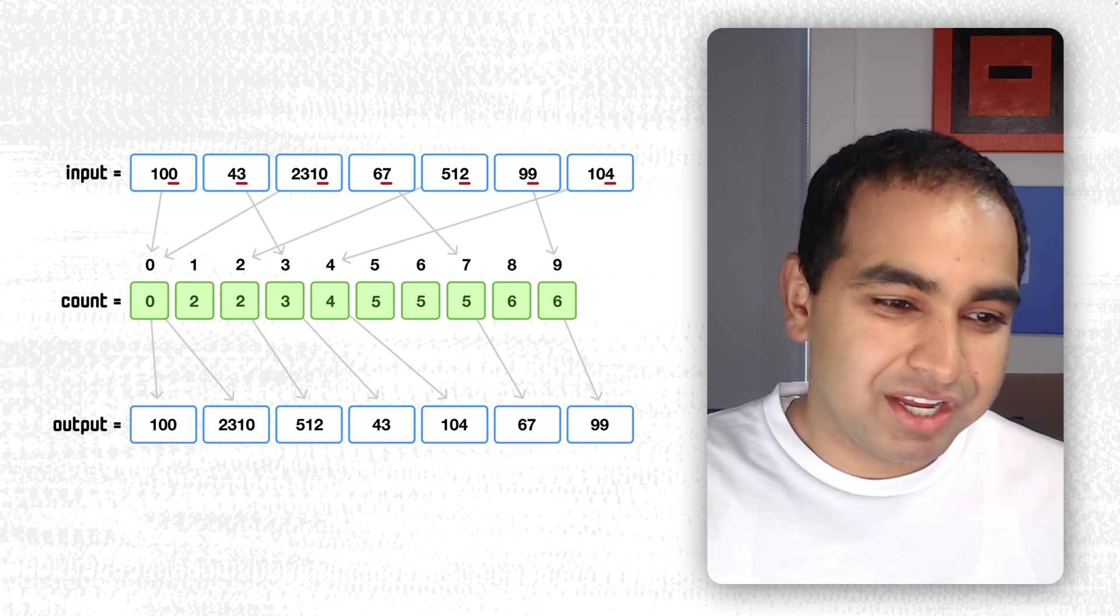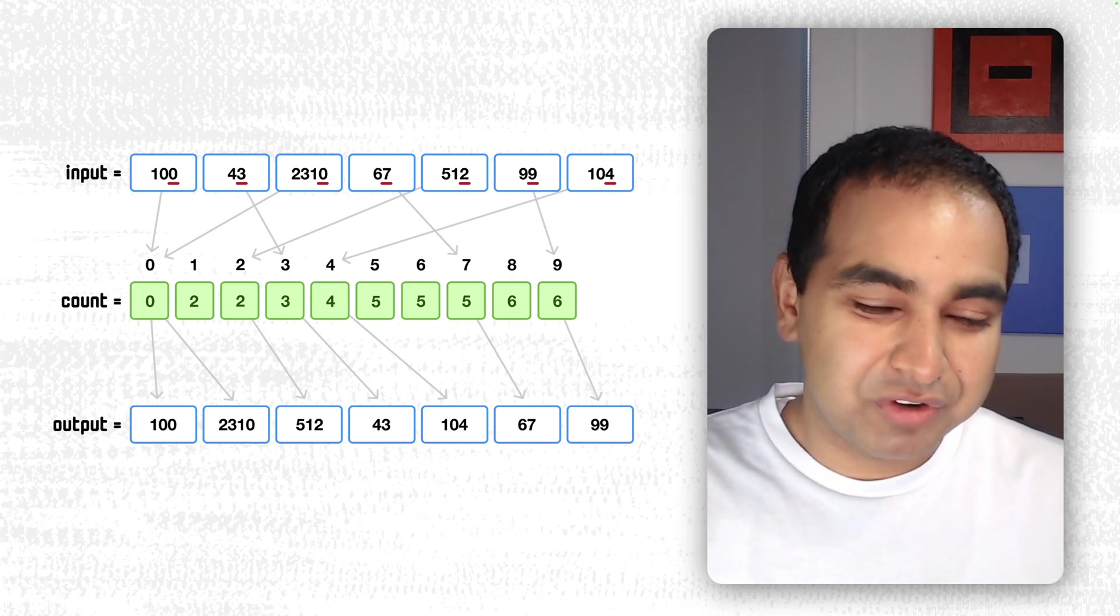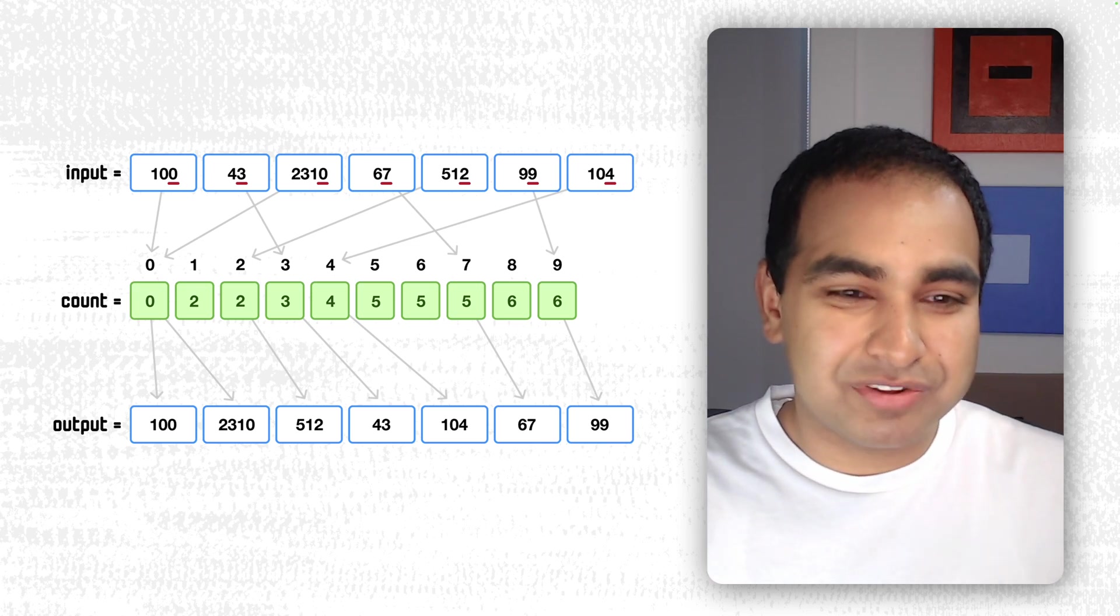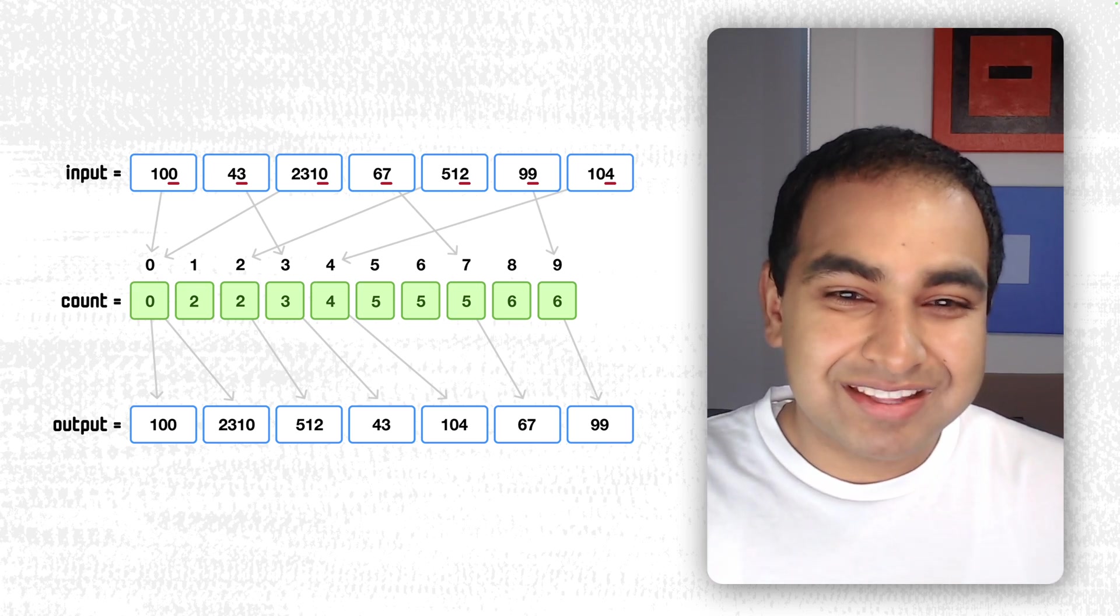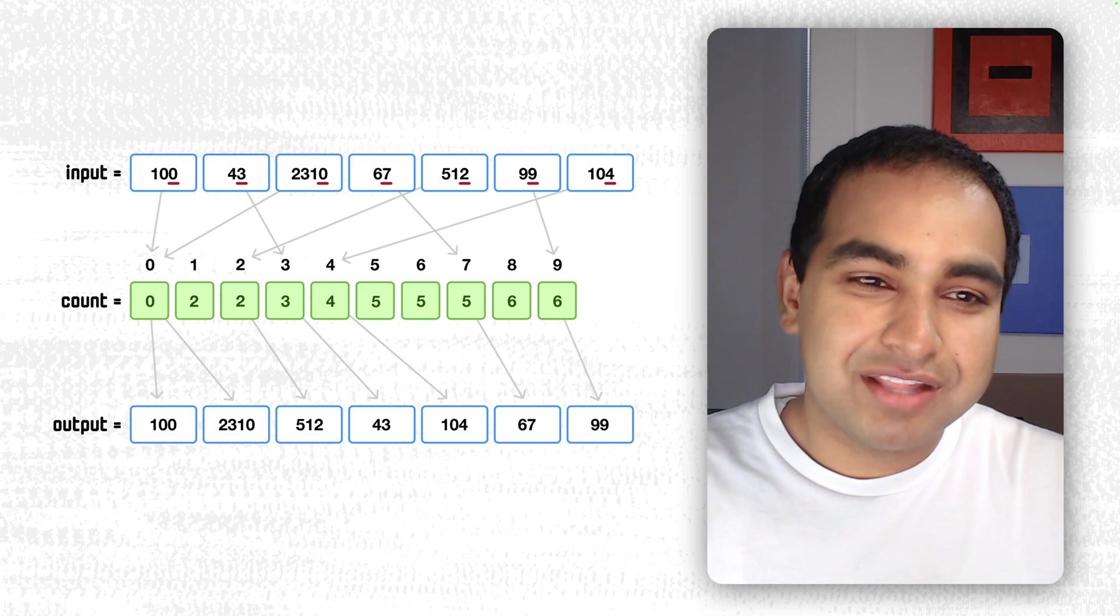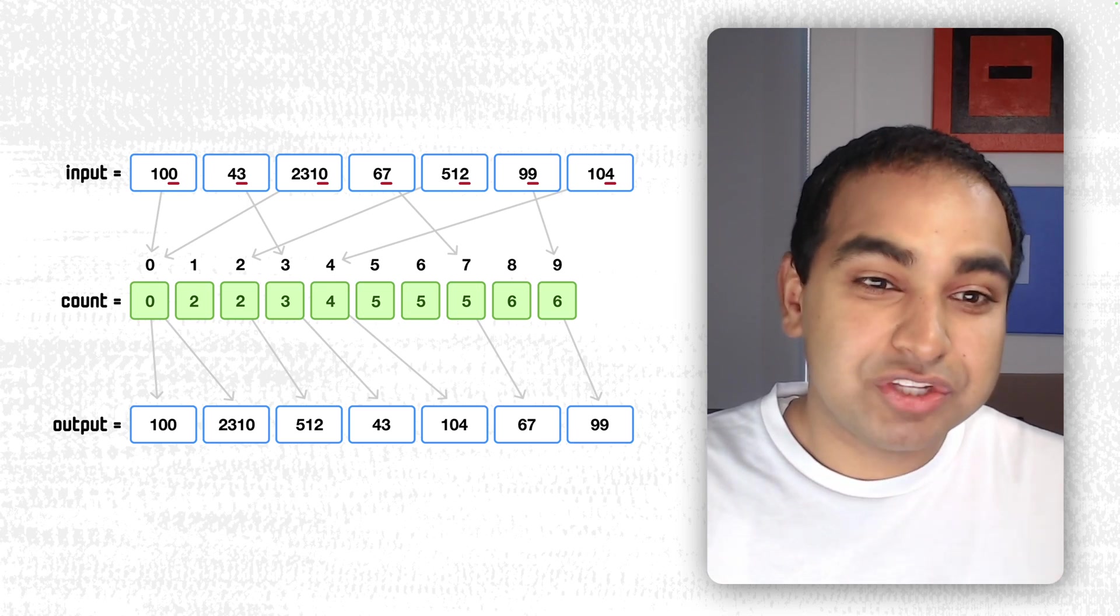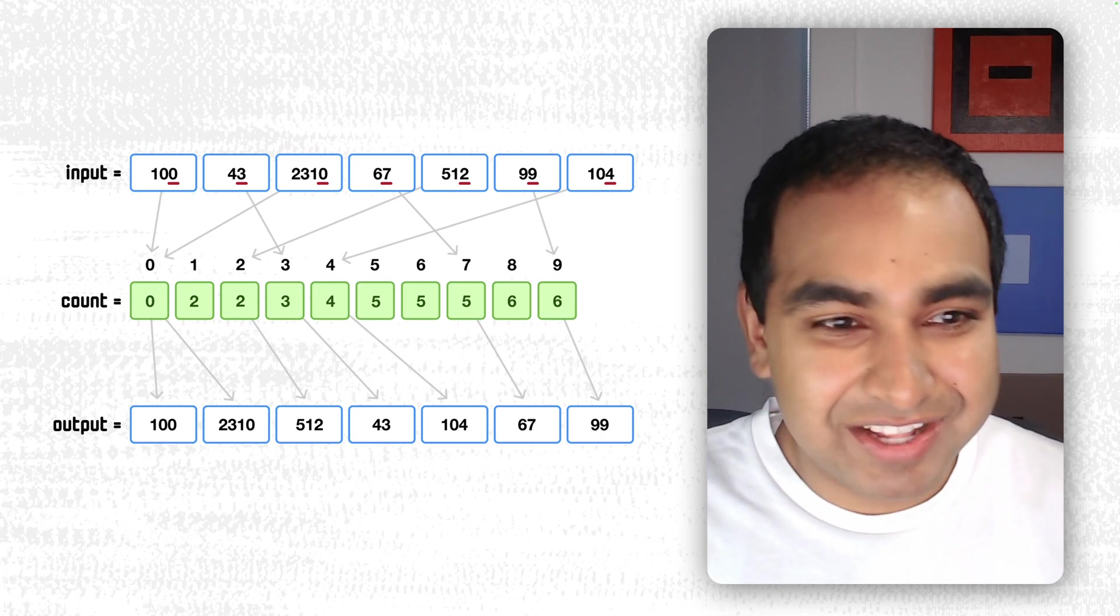and then we place the values in the output array based on what we calculated in the prefix sum value earlier. So when you sort everything by 1, you get 100, 2310, 512, 43, 104, 67, and 99. And so this is how we sorted by 1. And you can imagine this exact process repeats for every digit in our input, in each digit that's available, as the largest value in our input.